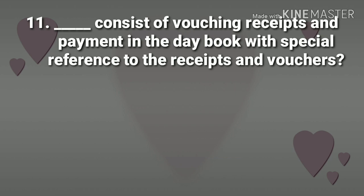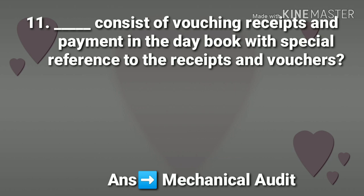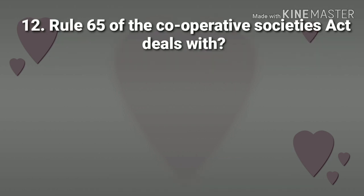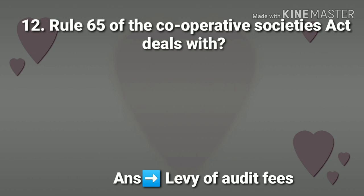11th question: This consists of vouching receipts and payments in the day book with special reference to the receipts and vouchers. 12th question: Rule 65 of the Cooperative Societies Act deals with what? Answer: Levy of audit fees.